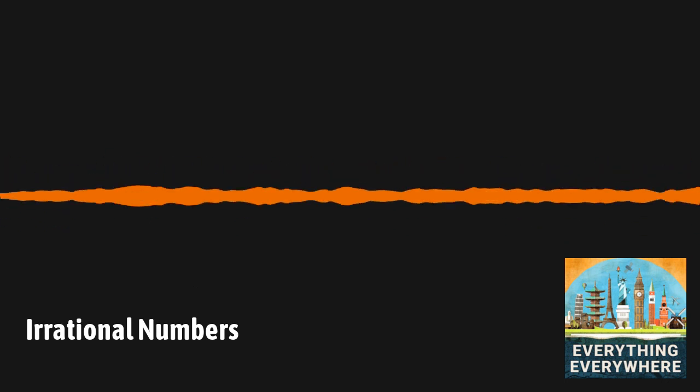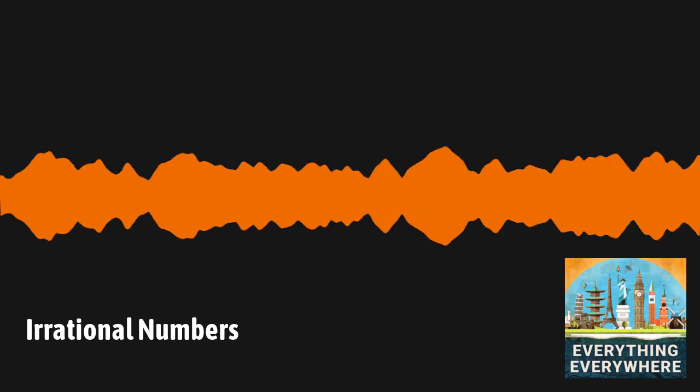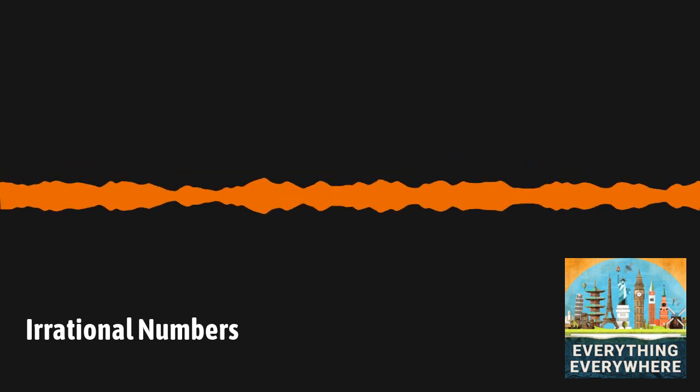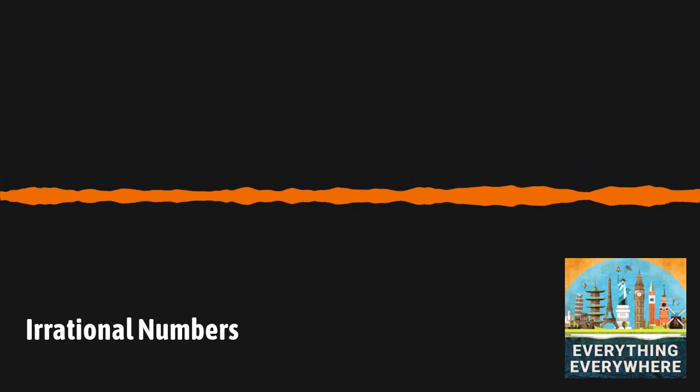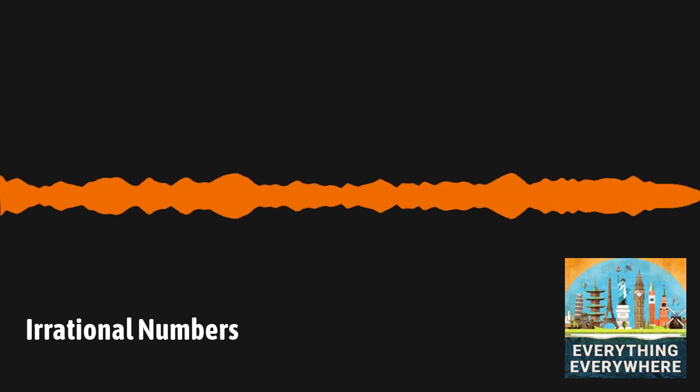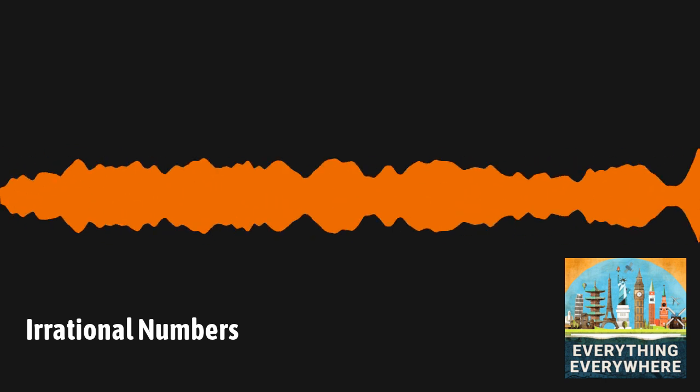If, in fact, all quantities and lengths could be expressed as rational numbers, then the existence of irrational numbers contradicted this belief and threatened the Pythagorean notion of a completely ordered and rational universe.